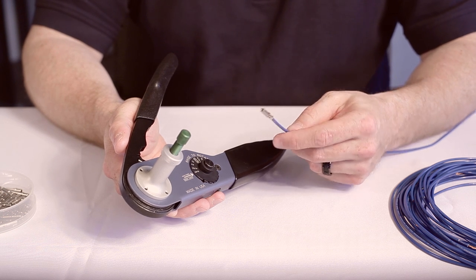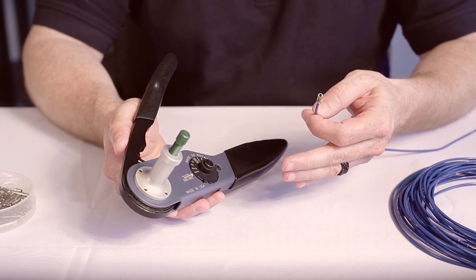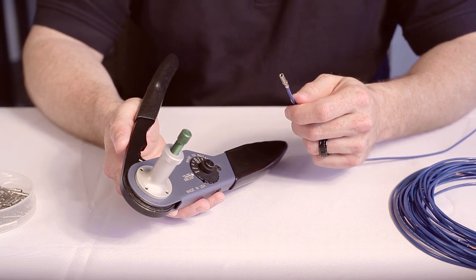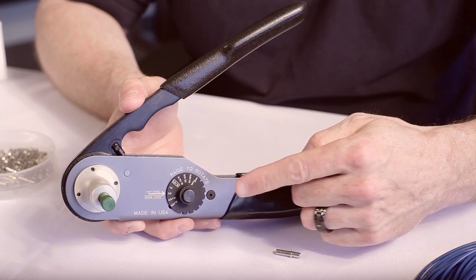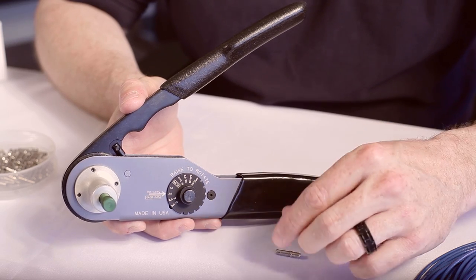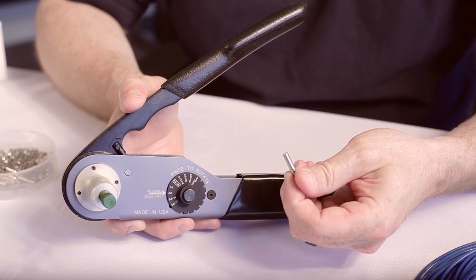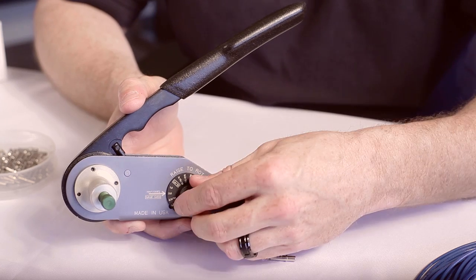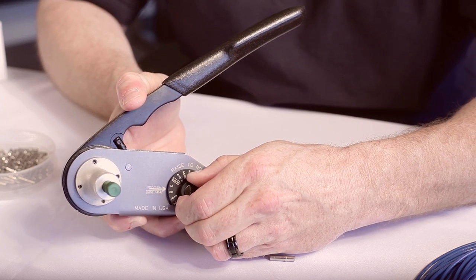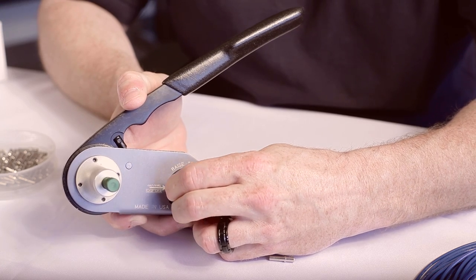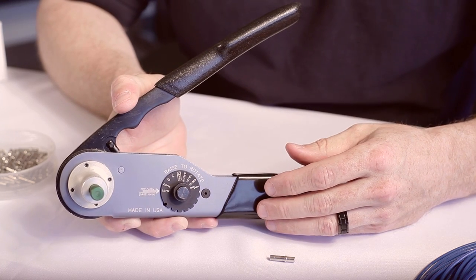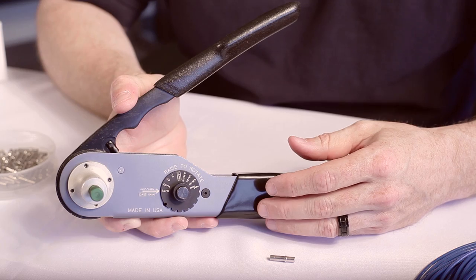With just a few quick settings, you can be making quality crimps quickly and consistently. The first step in using the tool is to set the contact size dial to match the size contact that you want to crimp. Just lift it up and turn it so the contact size lines up with the indexing mark on the tool. The dial will drop down and lock in place at your chosen size.